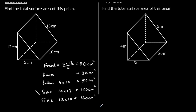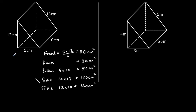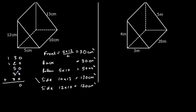We've got all the areas, we just need to add them together. So we have 130 plus 120 plus 50 plus 30 plus 30. That gives us 360cm squared.